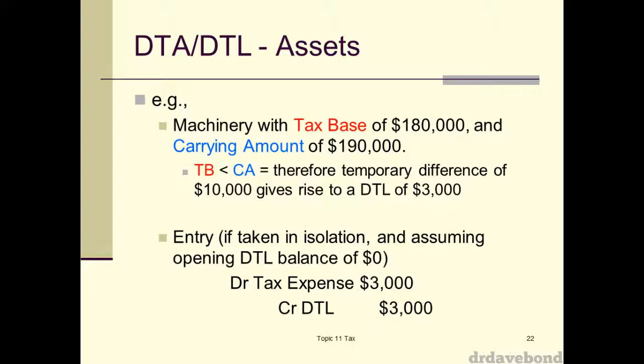Now in this case, if you look back at what an asset does, the tax base is less than the carrying value, and that's going to give rise to a DTL. So when you see in the example that you've got there, if the opening balance was zero, you debit tax expense $3,000, you credit deferred tax liability $3,000, and that's all that you need to do.